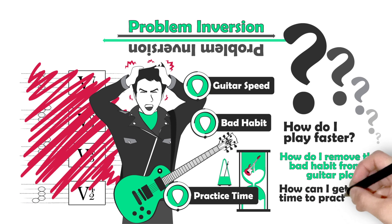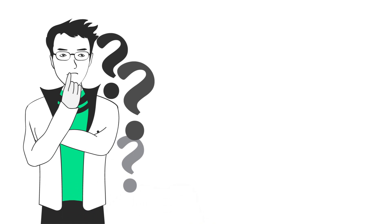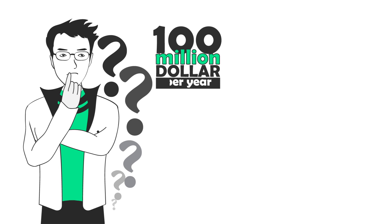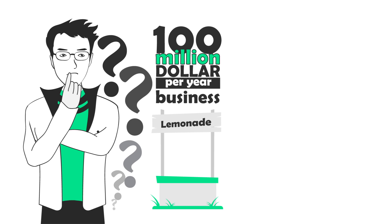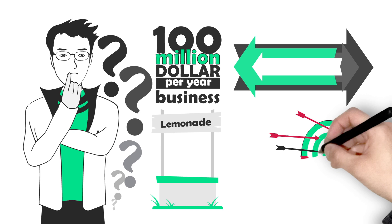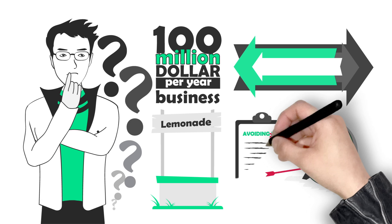Here's the thing: if you're not an expert at practicing, these questions are hard to answer. It's like asking how to build a hundred-million-dollar-per-year business when you're five years old running a lemonade stand — it's just way too overwhelming. But you know what's easy? Inverting your problems, or getting clear on what you don't want to happen. Simply make a list of things that don't get you what you want and then avoid those things. Instead of looking for answers on how to do something, make a list of ways how not to do something. Let's look at some examples.